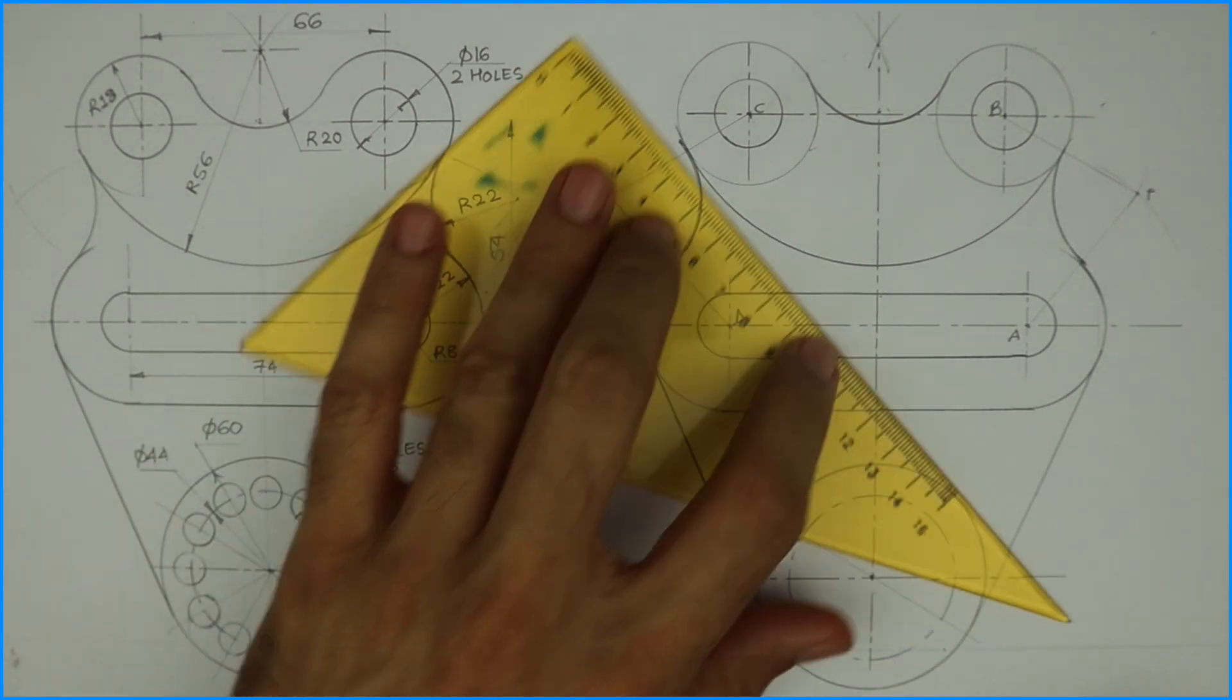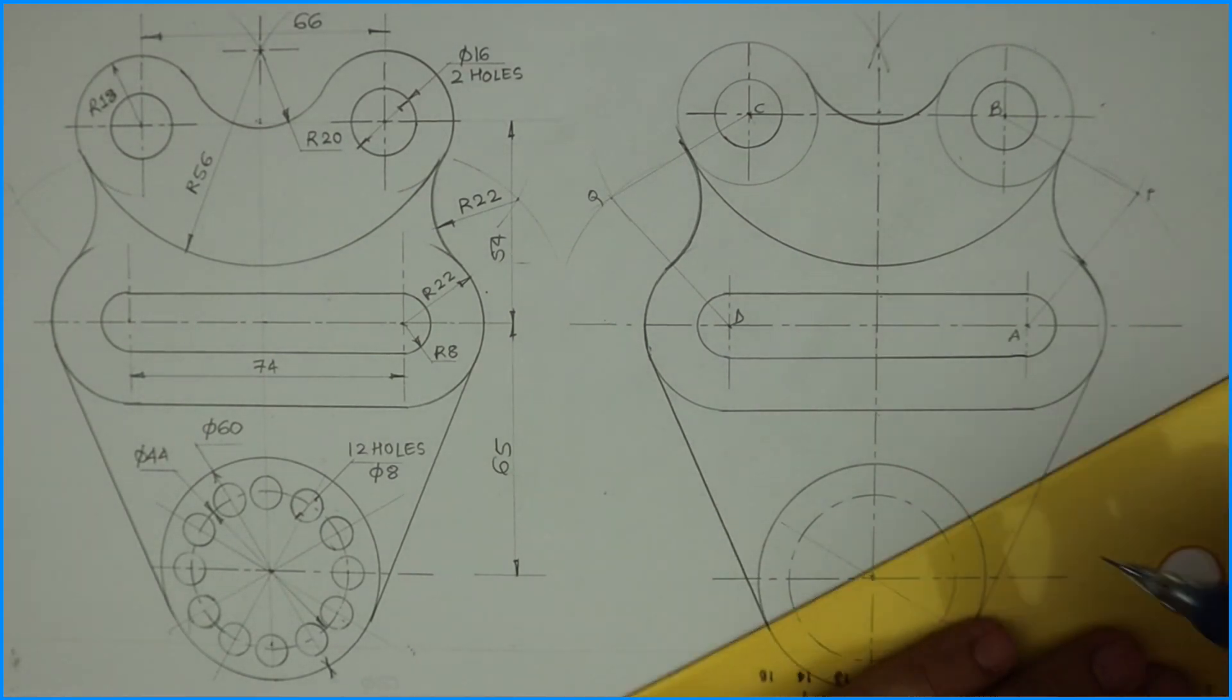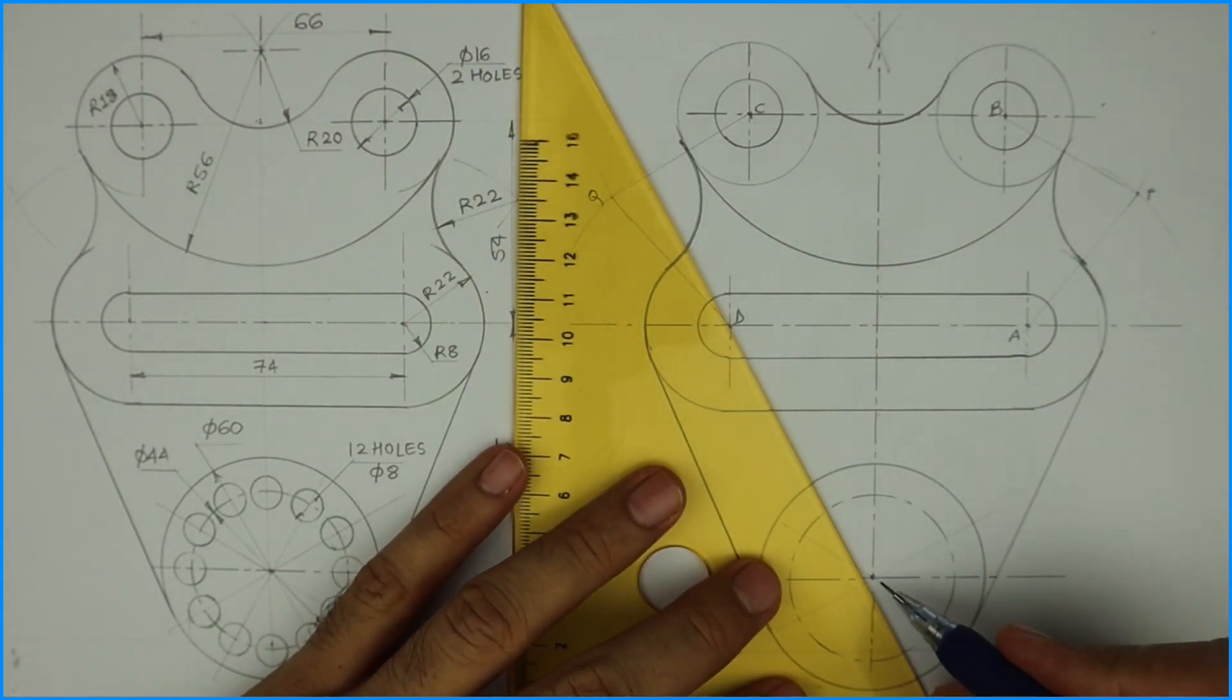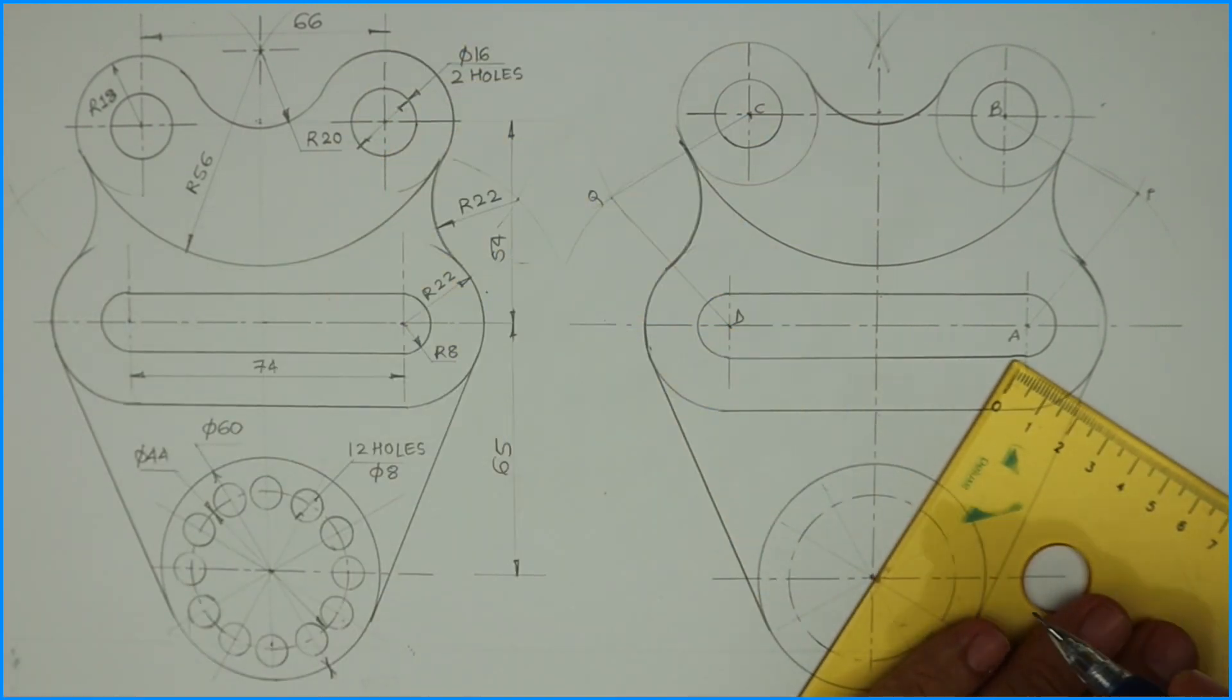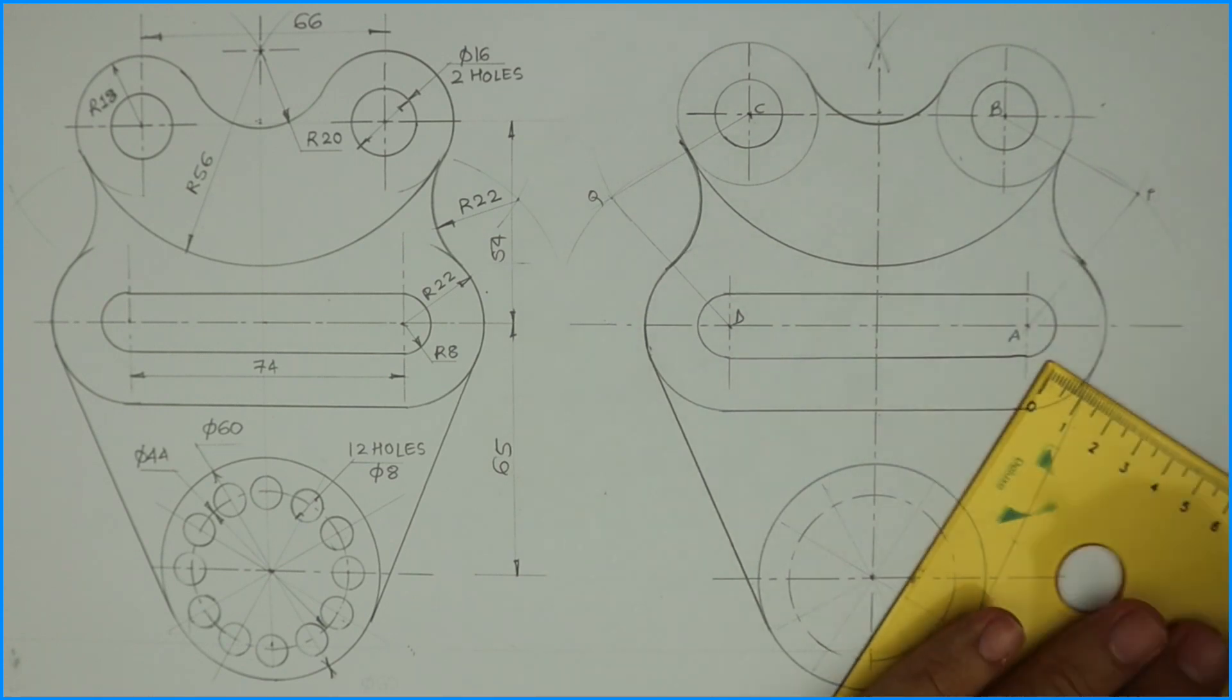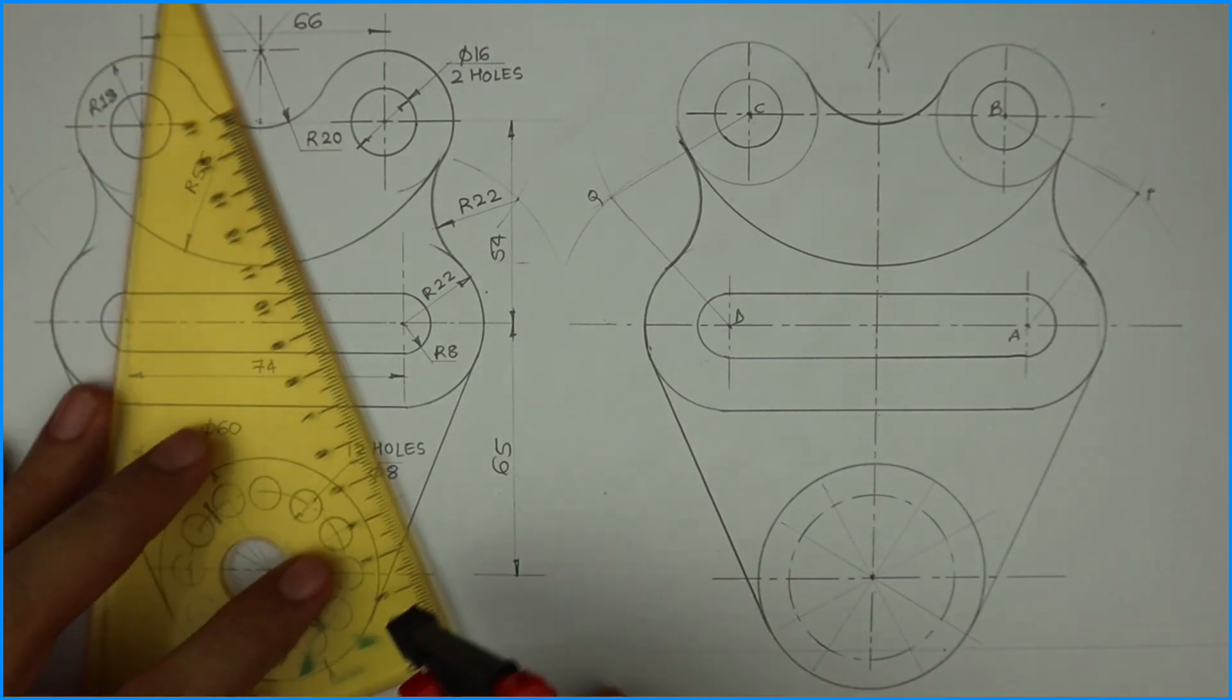And then you divide the circle into 12 parts. After that you take radius 4 and draw a circle from each point.